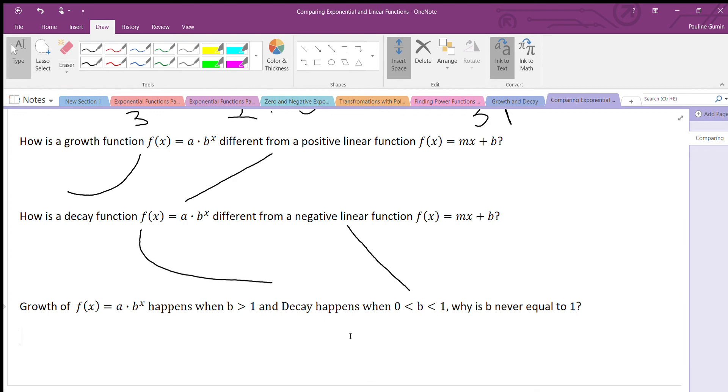So, why can't b equal 1? I'll give you a quick example. What is 1 to the power of 0? 1. What's 1 to the power of 2? 1. What's 1 to the power of 400? It's 1. Well, what's 1 to the power of negative 1,000? Still 1. So, 1 to any power is 1. And no matter what a is, it's just going to multiply by 1. So, if a was 5, no matter what we plugged into x, we would always get 5 for y. We'd actually just get a horizontal line if b was equal to 1, which is not an exponential function.